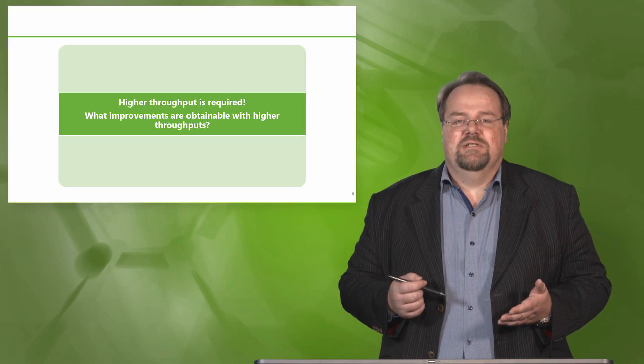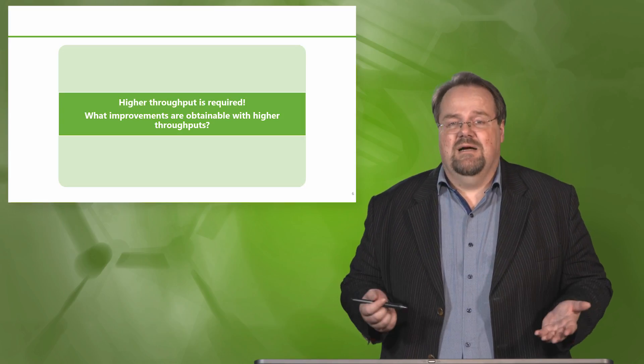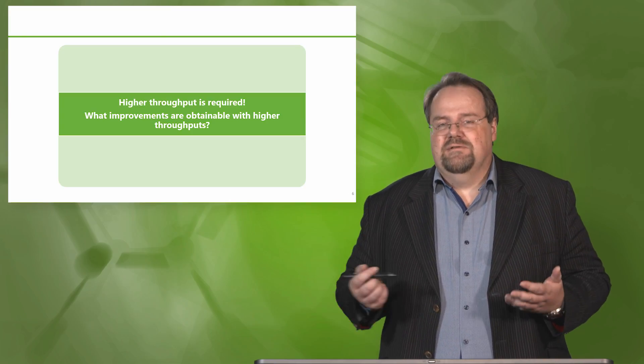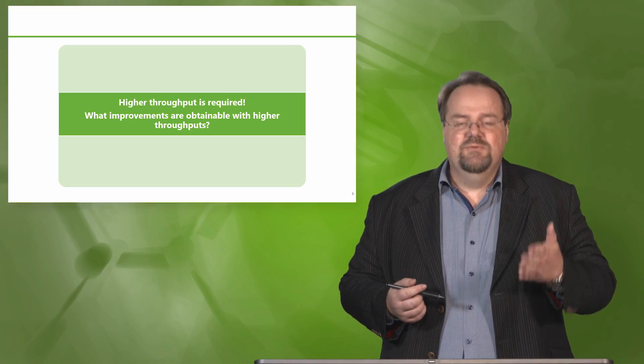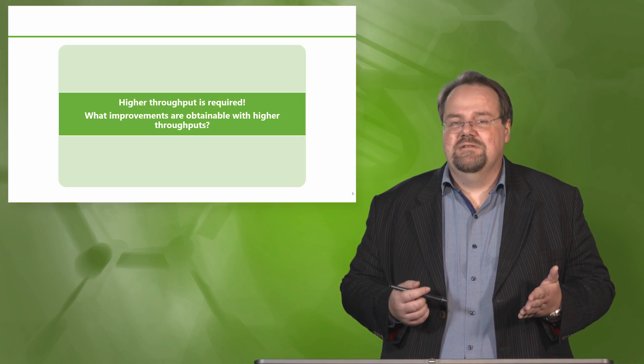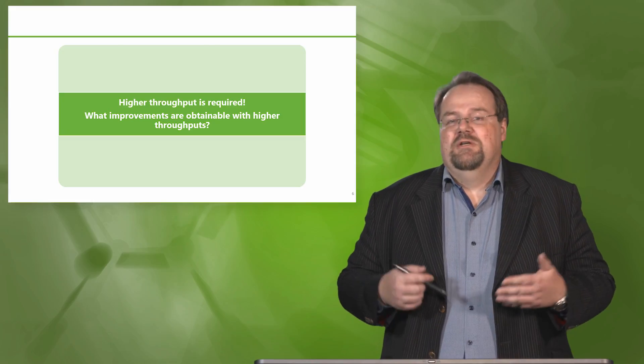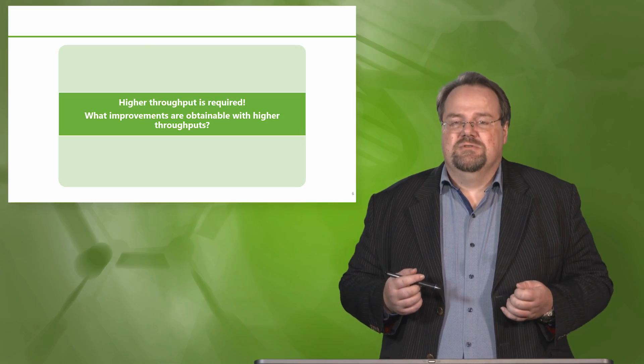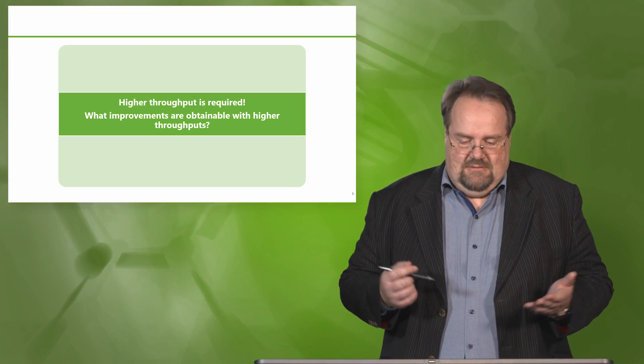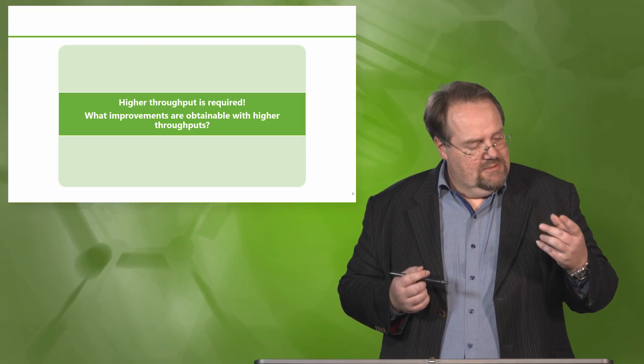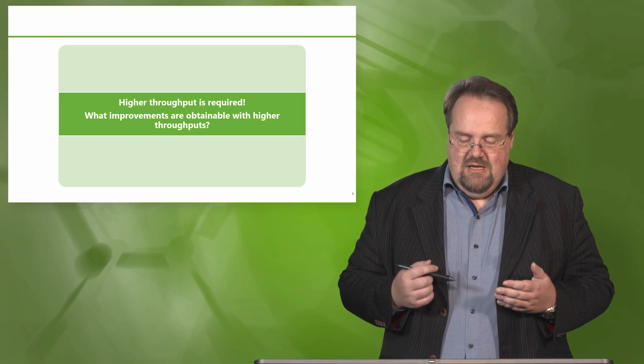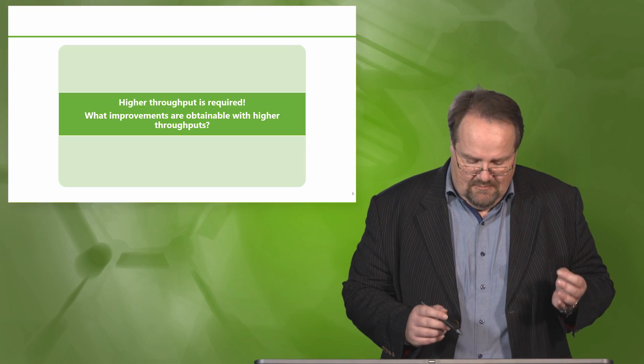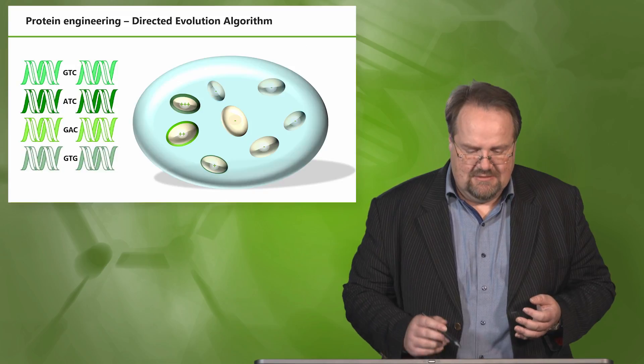To already answer these questions, it's highly important. There are several examples where when you increase the throughput from a few thousands to a few million events, instead of getting your factor 2 per round of improvement in activity, you get factors up to 40, 45 in a single novolution round by combinatorial exchanges of positions. So throughput really matters. Which are the formats that are available? On the one hand there are microfluidic systems, but today still the methods with the highest throughput are flow cytometry based screening systems.